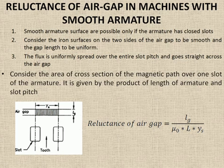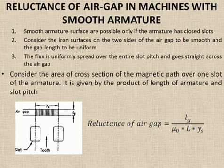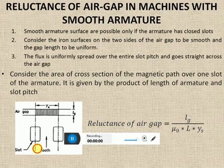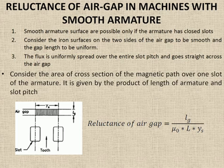The air gap length is indicated as LG. This diagram is the stretched version of the front cross-sectional view of a machine. Since the surface is smooth, the flux is uniformly spread over the entire slot pitch. The standard relation of reluctance is SE = L / (μ₀ × A), and we will use the same relation here for calculating the reluctance of the air gap in the smooth armature.